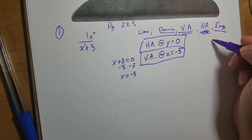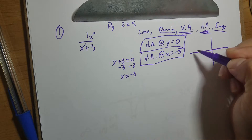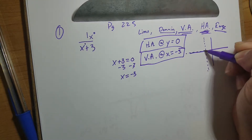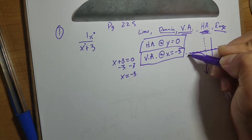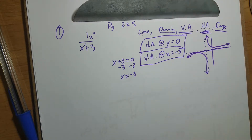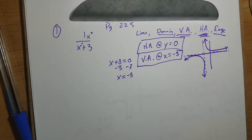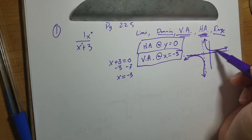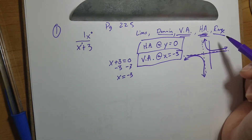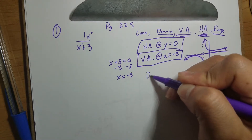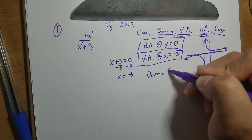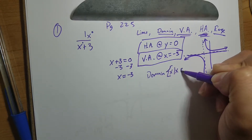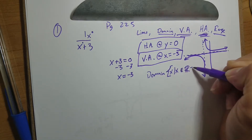Now let's talk about our domain and range. Let's think about what our graph looks like — we have a vertical asymptote at x equals negative three and a horizontal asymptote at y equals zero, so the graph looks something like this. If we're talking about domain, which is the set of all x-values, it goes on forever to the left and forever to the right. The only number it will never touch is negative three.